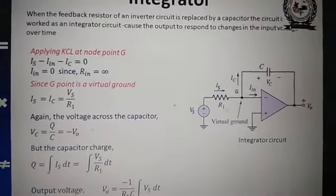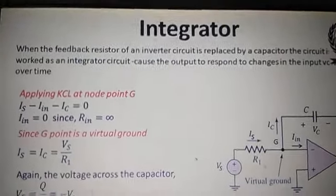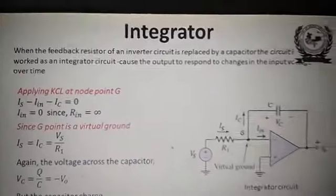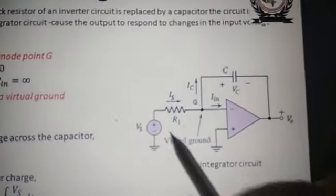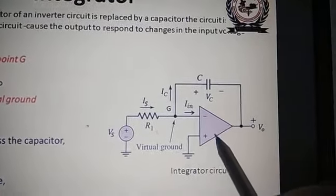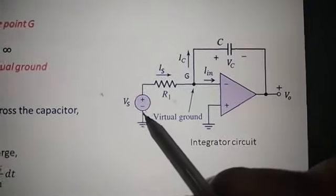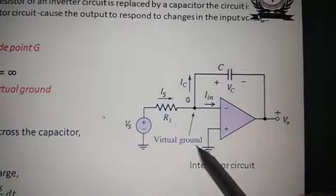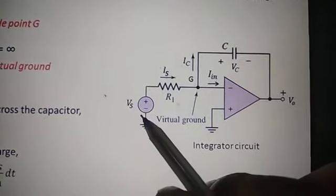Another important op-amp application is the integrator. An integrator is a circuit which provides an output proportional to the integration of the input. Here we will use the active integrator. If we don't use the operational amplifier and connect the capacitor and ground it, it is called a passive integrator. There exists a loss in the passive integrator, so in place of passive we use this active component — the operational amplifier — making it an active integrator.